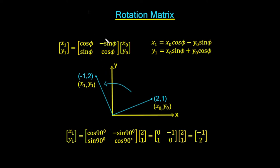In order to do that we use the rotation matrix. We're looking for the new point x1,y1 and it's going to be the cosine of the angle we want to rotate it — we'll just use degrees here for simplicity. So it's cos(90) and minus sin(90), sin(90) and cos(90). That's this rotation matrix with the angle phi replaced by 90 degrees, and we multiply that by the original point x0,y0 which is (2,1).